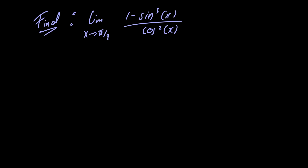In this video we're going to figure out what the limit is as x approaches pi over 2 of 1 minus sine cubed of x divided by cosine squared of x. We can't just go ahead and plug in x equal to pi over 2, as cosine squared of pi over 2 is equal to 0, and we're not allowed to divide by 0.